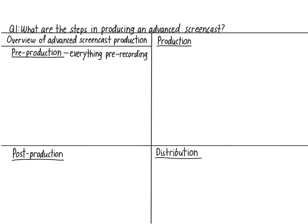Pre-production is everything you do before hitting the record button. Production is the actual act of recording. I'll also include mixing the audio of your voice with the visuals of your video here, even though mixing is usually considered post-production.